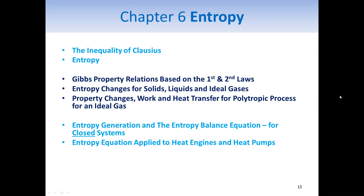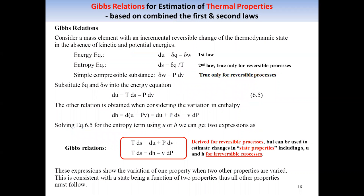In the second part of chapter six, we would like to discuss Gibbs' property relations, which are a group of equations derived from the first law and the second law. They will be used for the estimation of entropy change for solid, liquid, and ideal gas. They will also be used for the estimation of property changes, work, and heat transfer for polytropic processes. Let's look at how Gibbs' relations are generated.